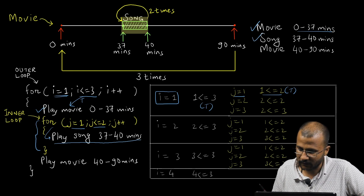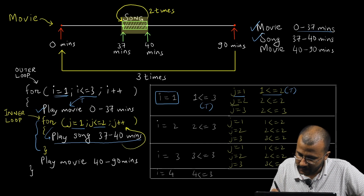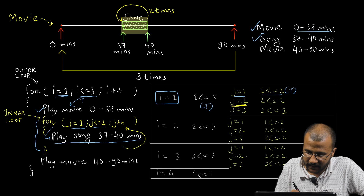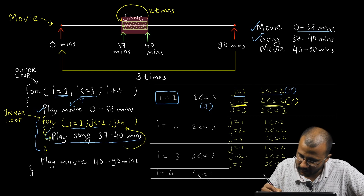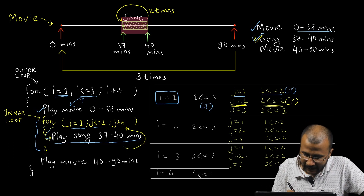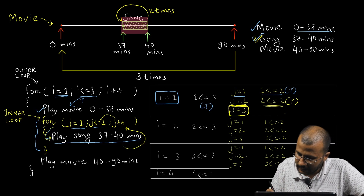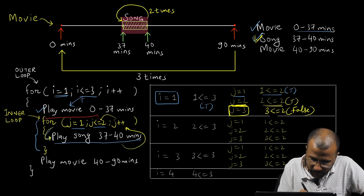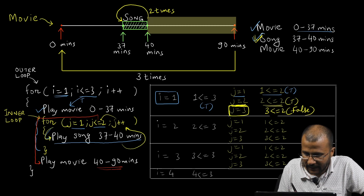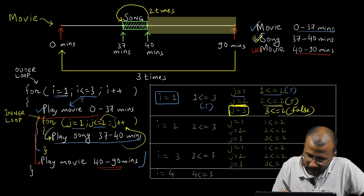After the song plays, j increments to 2. Condition 2 less than or equals to 2 is true, so the song plays a second time. Then j increments to 3. Condition 3 less than or equals to 2 is false, so we exit the inner loop. We then play the movie from 40 to 90 minutes. One full iteration of the movie is complete.